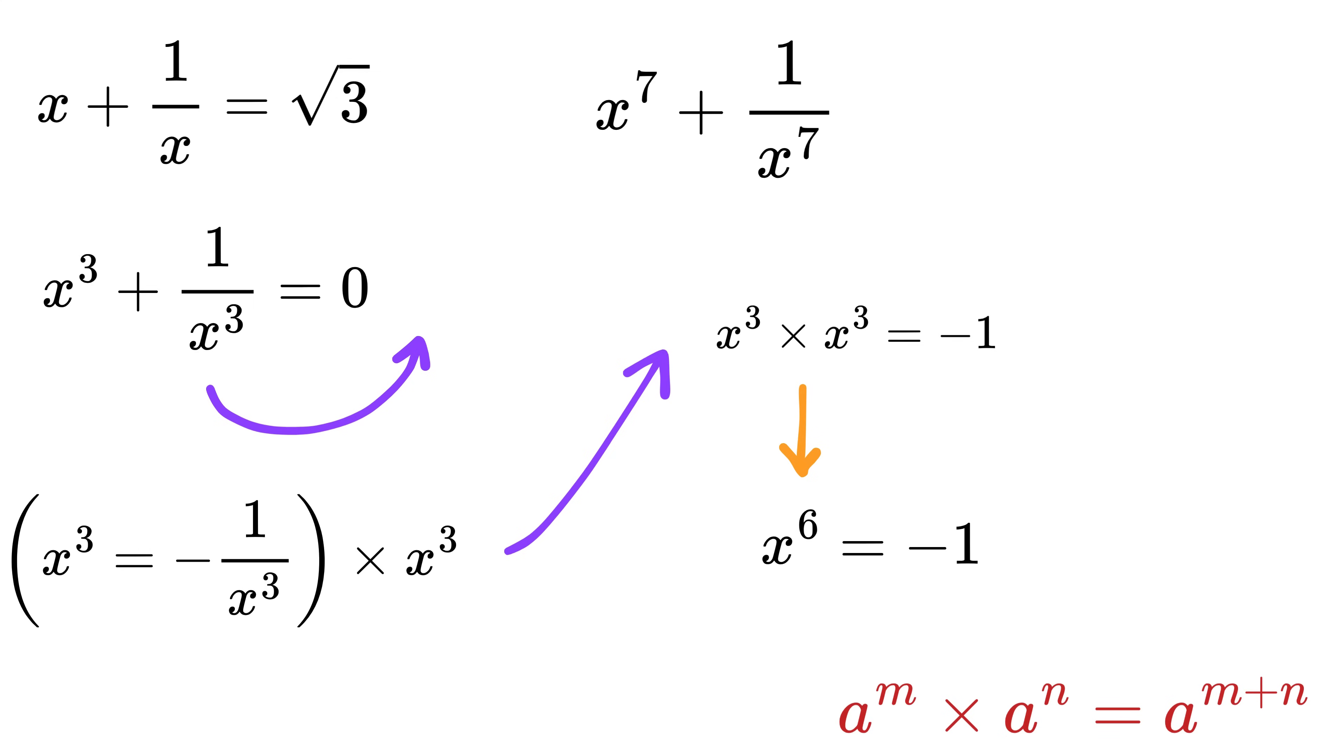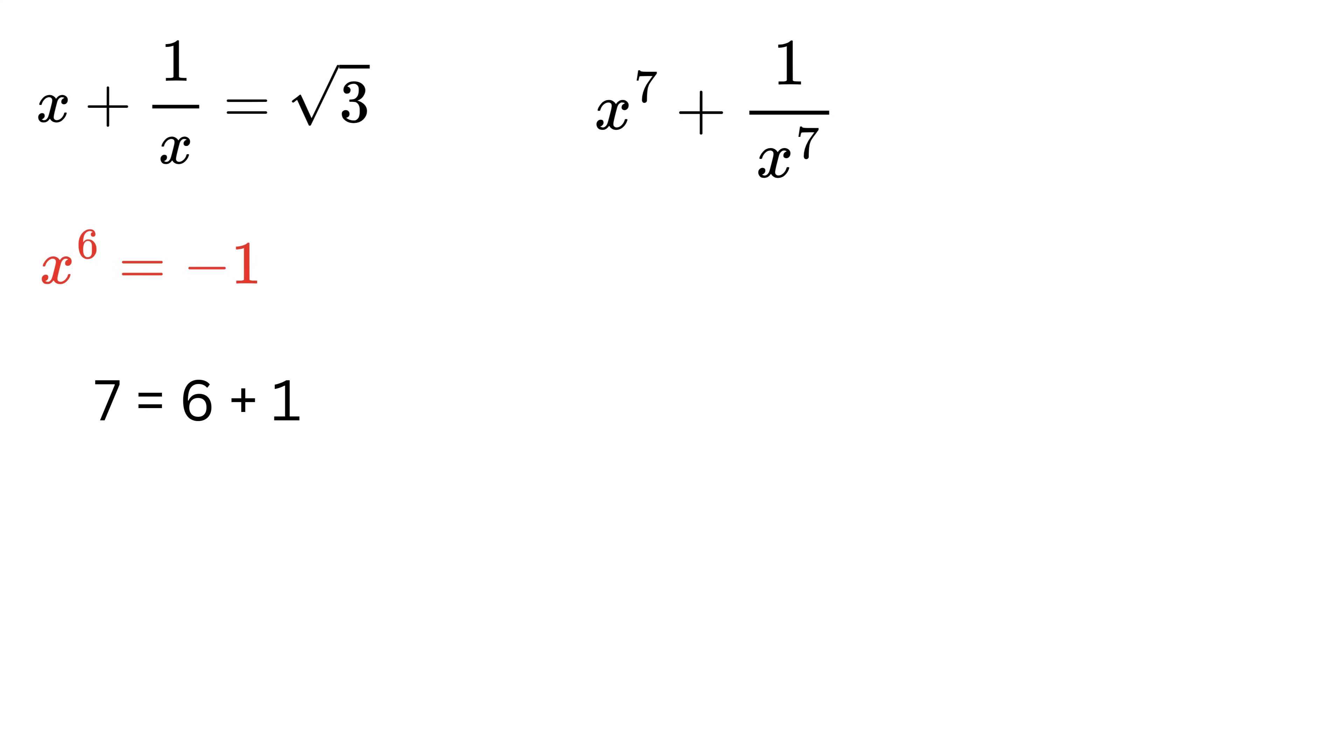Now comes the fun part. Think of 7 as 6 + 1, and thus we can rewrite x⁷ as x⁶ × x. But we already know that x⁶ = -1, so x⁷ = -x.